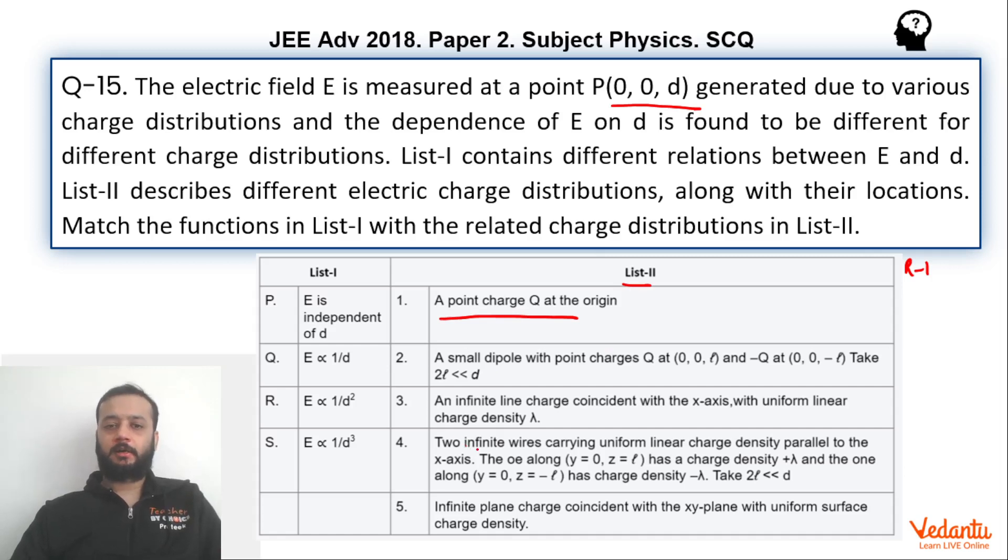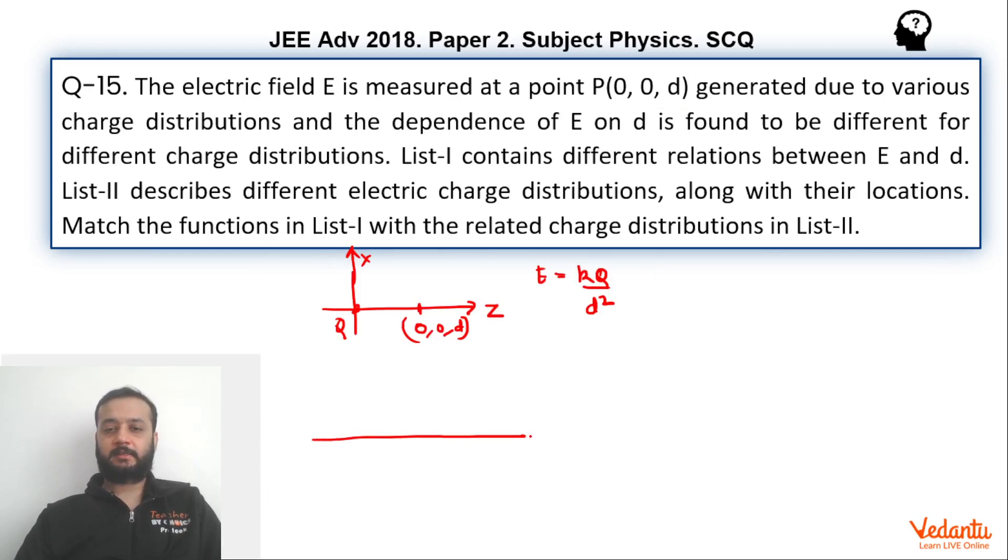Now let's go to the option 2 or configuration 2. A small dipole with point charges Q at 0, 0, L and minus Q at 0, 0, minus L. 2L is much less than d. Let's see what's the scenario. Let's say that this is the z-axis, this is the x-axis. So here 0, 0, L, and here plus Q charge is kept, and this is minus L and here minus Q charge is kept. And we have to find the dipole electric field at point P which is at a distance d. This is 0, 0, d.